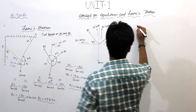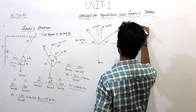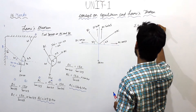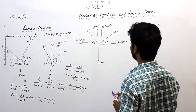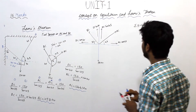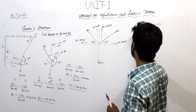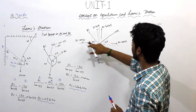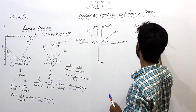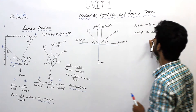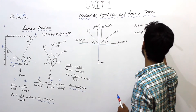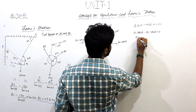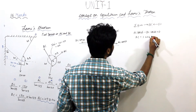Resolving forces along the horizontal direction equals zero. Taking forces in the positive direction as positive and negative direction as negative: AC cos 45 minus BC cos 30 equals zero. Solving this equation, we get AC is equal to 1.224 BC. This is equation one.